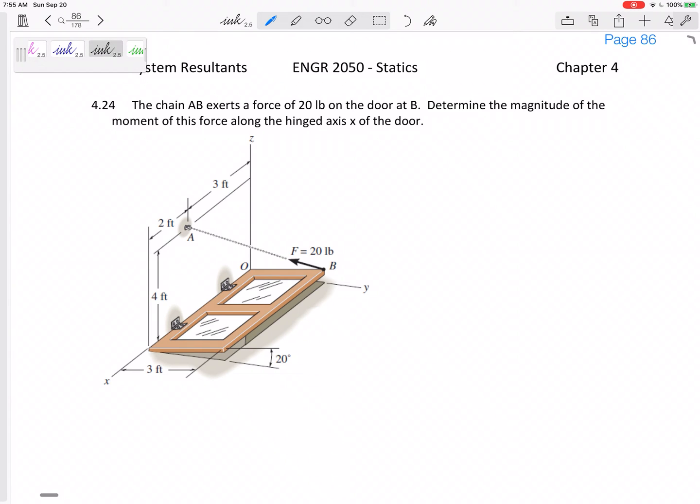All right, and how about this one? This chain has a tension of 20 pounds. Find the magnitude of the moment of the force along the hinged x-axis right here. So what's the moment about that axis? The magnitude of the moment about that axis. So I know it's moment about an axis, so I do u dot r cross F.